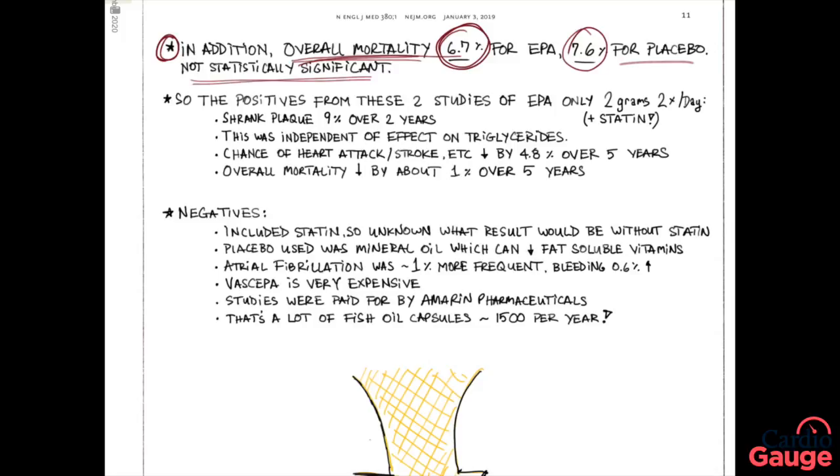So the positives from these two studies of EPA-only, 2 grams twice a day, in a background of people who were taking a statin: it shrank plaque 9 percent over two years; this was independent of the effect on triglycerides, making you wonder if the treatment would work for people who had a normal triglyceride level; the chance of heart attack, stroke, etc., decreased by almost 5 percent over five years; and then lastly, the overall mortality decreased by about 1 percent over five years.